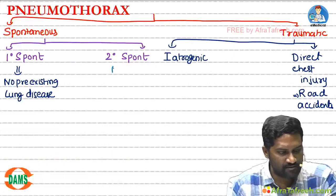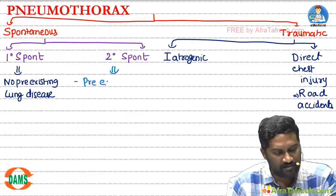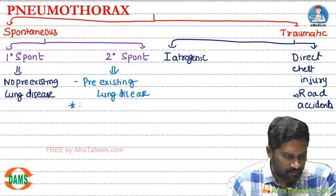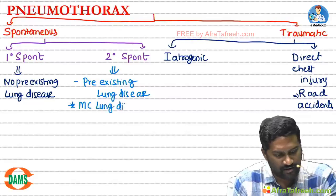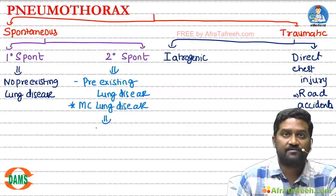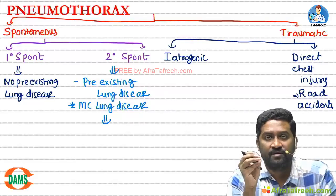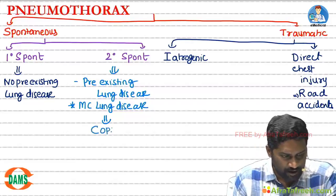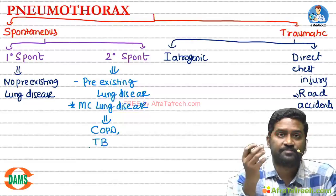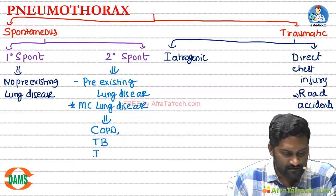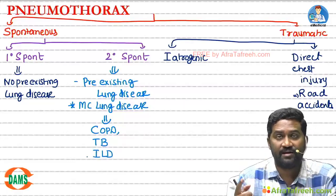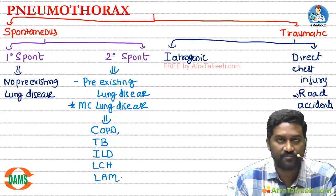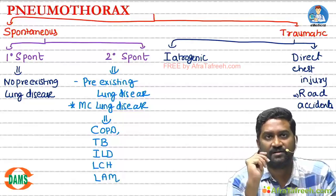In secondary spontaneous pneumothorax, there will be a pre-existing lung disease resulting in pneumothorax. The most common lung disease responsible is COPD emphysema, where hyperinflated areas called bullae can rupture. Apart from that, tuberculosis — where cavities can rupture — and ILDs. Rare diseases such as Langerhans cell histiocytosis (LCH) and lymphangioleiomyomatosis (LAM) can also cause it.